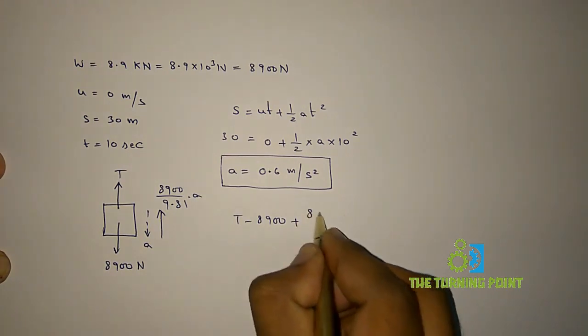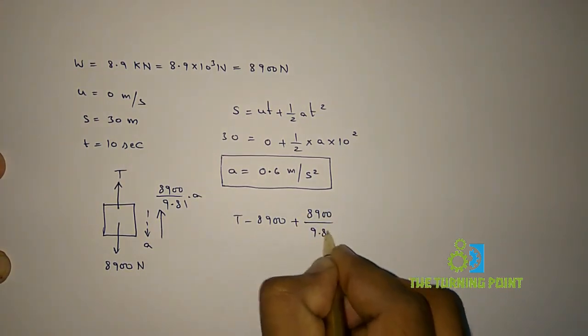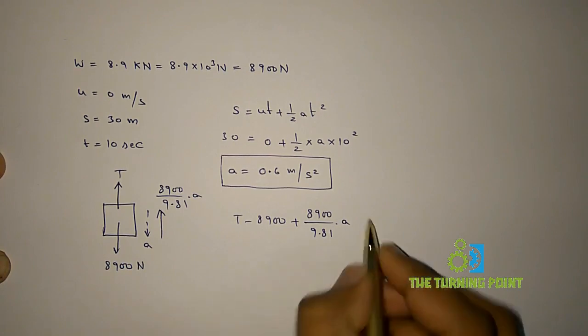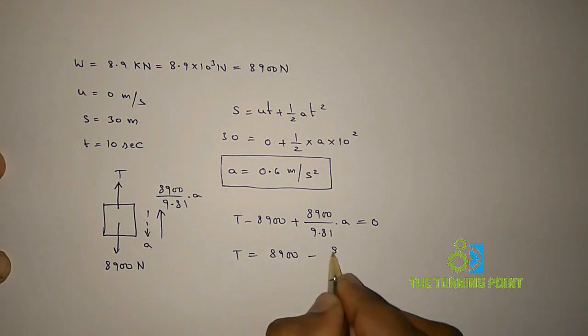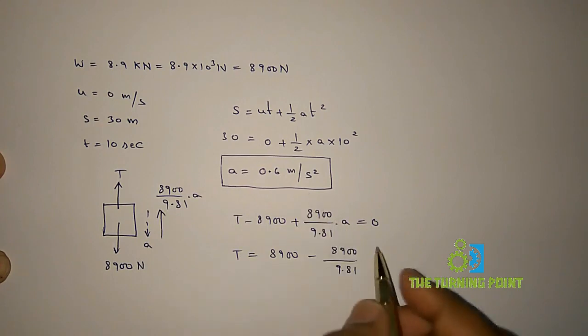Plus 8900 divided by 9.81 into a equal to 0. From that, T is equal to 8900 minus 8900 divided by 9.81 into acceleration. We got that one is 0.6.